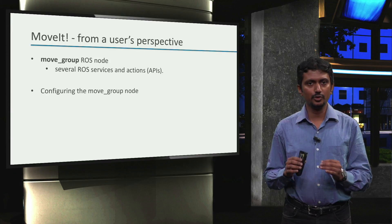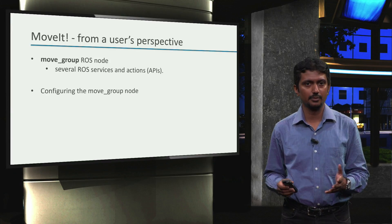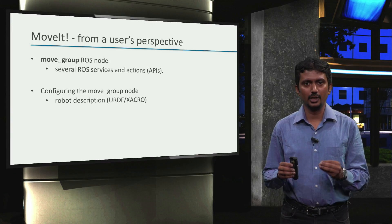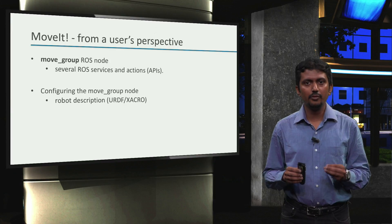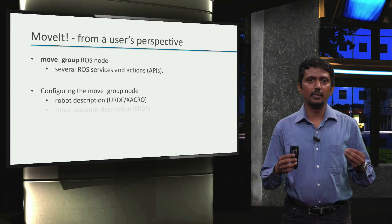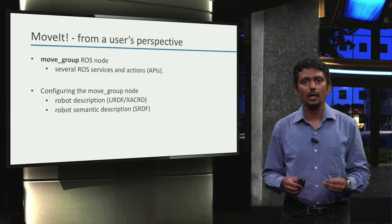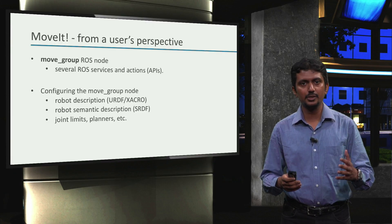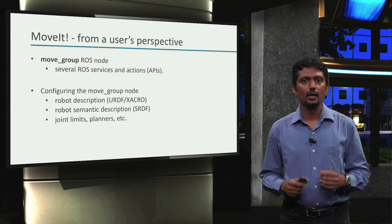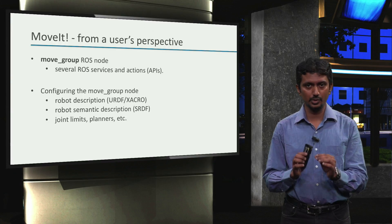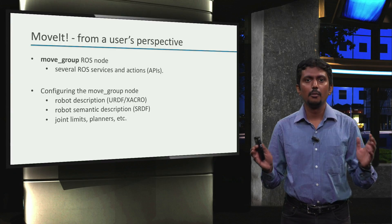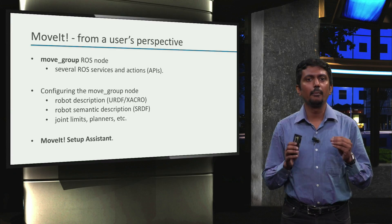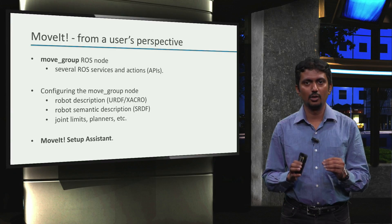To effectively use the MoveGroup node, we need to configure it with a few parameters. The first being the robot description parameter, which is the robot URDF or XACRO model we built in week 2. Then the robot semantic description, which we will see shortly. And some parameter files specifying different entities like robot joint limits, the motion planner options, and so on. That's very nice that we have to do so little as users to get so much out of MoveIt. But how do we set up all these parameters? We do that with an amazing graphical user interface called the MoveIt Setup Assistant. Let's see how to use it in the next video.